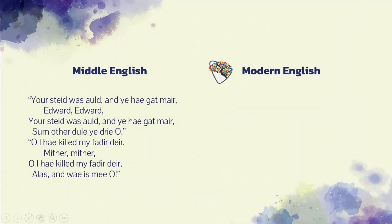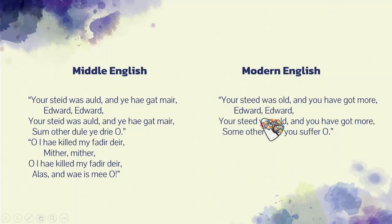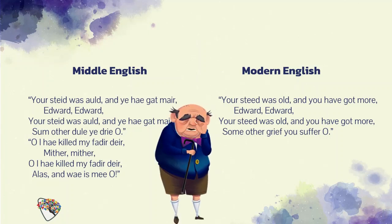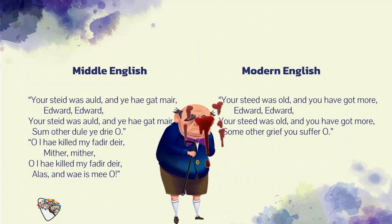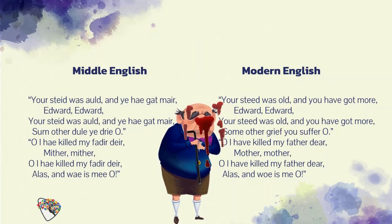'I have killed my father dear, mother, mother.' The blood belongs to his father. 'Alas, and woe is me.' Woe is me means he is regretting his action — he has done it but is not at peace. He feels a guilty conscience for what he had done. 'And what penance will you dree for that, Edward, Edward? And what penance will you suffer for that, my dear son, now tell me all.'